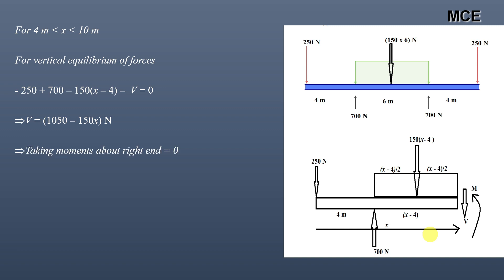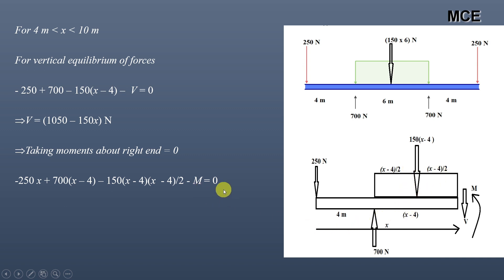Taking moments about the right end equal to zero: moment of the 250 newton load is minus 250x (anti-clockwise), moment of 700 newtons is 700 into (x minus 4), and the moment of the UDL 150 into (x minus 4) about the right end is anti-clockwise, giving 150 into (x minus 4) into (x minus 4)/2, minus M equals zero. We get the moment function equal to minus 75x² plus 1050x minus 4000 newton-meters.